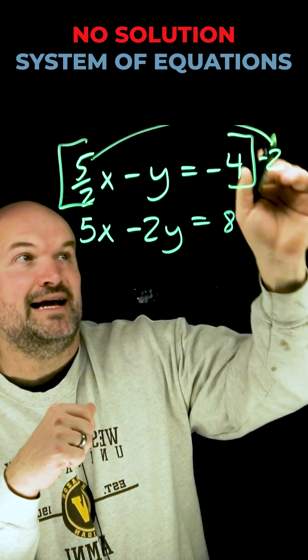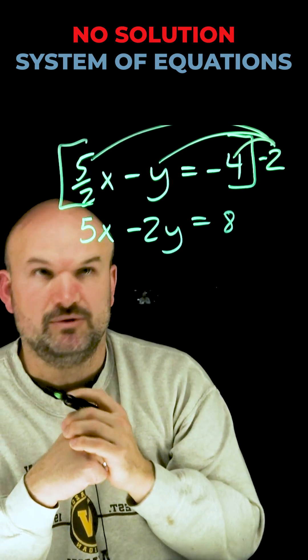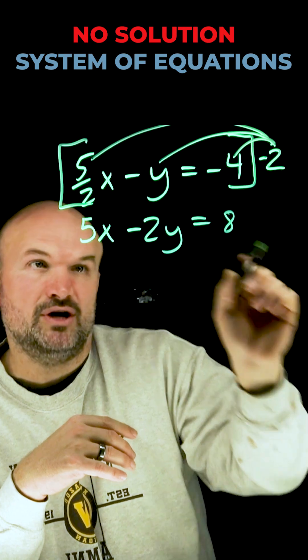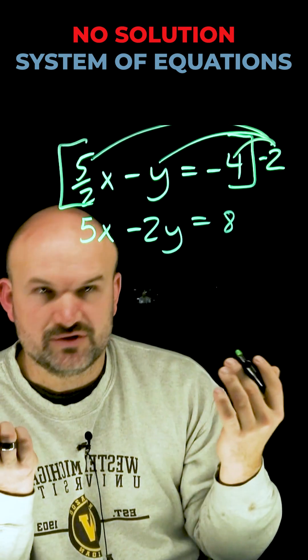You just need to make sure you multiply negative 2 times each and every one of your terms in your top equation. Then we're going to rewrite that down below with our bottom equation, which we did not change.